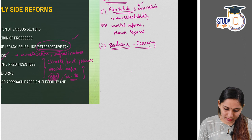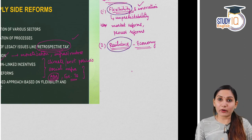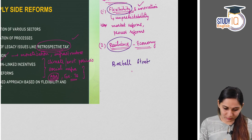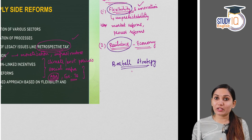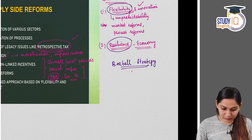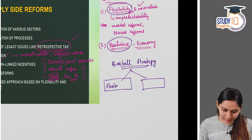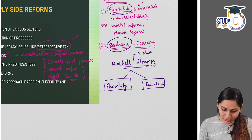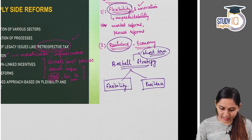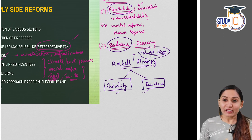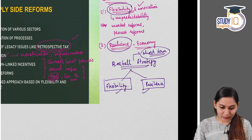Flexibility and resilience are the two focus areas or themes of India's supply side reforms. We have already learned about the barbell strategy, which also involves a two-pronged approach. The barbell strategy and supply side reforms are analogous to each other — both revolve around flexibility and resilience. However, the barbell strategy is the short-term response to the pandemic, whereas the supply side reforms are long-term in nature.